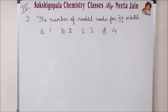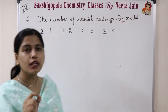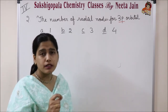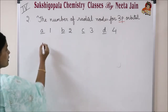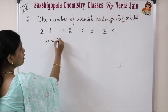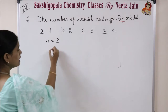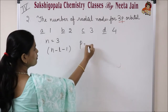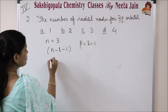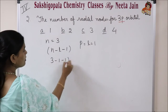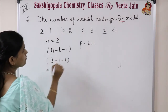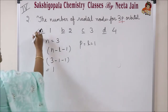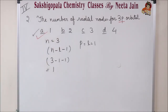Question number 2: the number of radial nodes for 3p orbital. Here 3p is given, so principal quantum number N equals to 3. The formula for radial nodes is N minus L minus 1. For p orbital, the value of L is 1. So 3 minus 1 minus 1 gives 1. The correct answer is option A — 3p orbital has only 1 radial node.